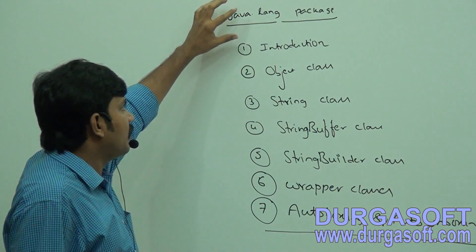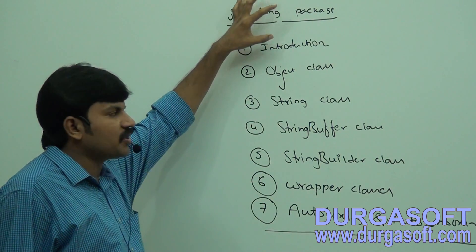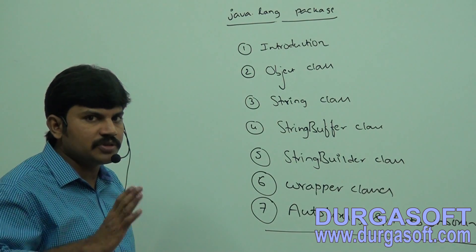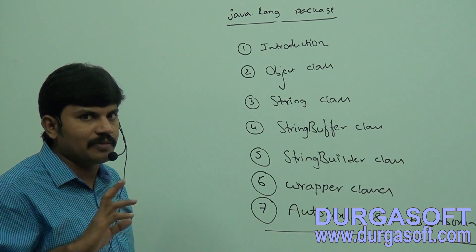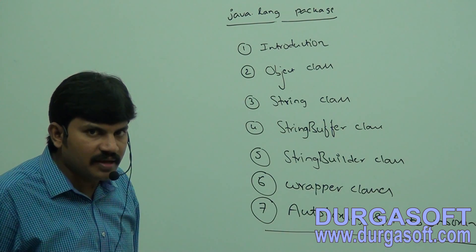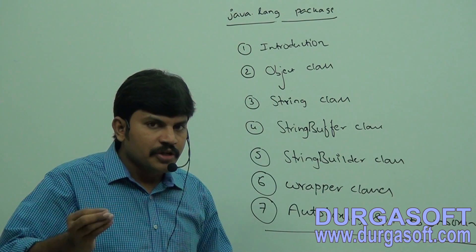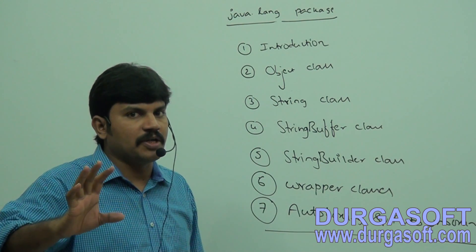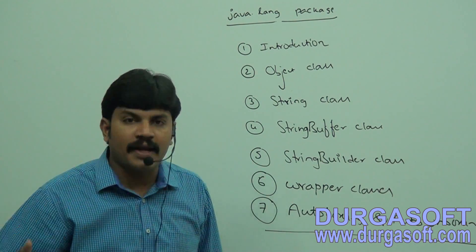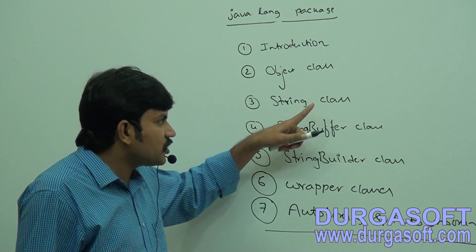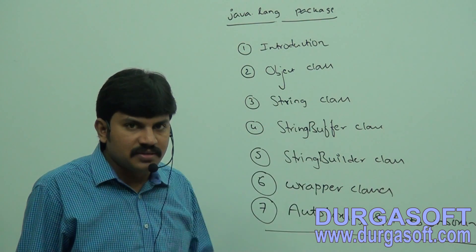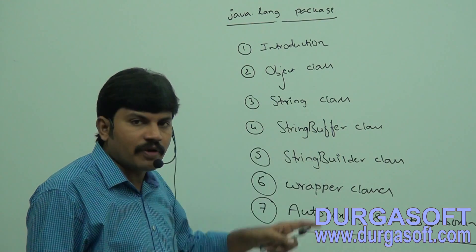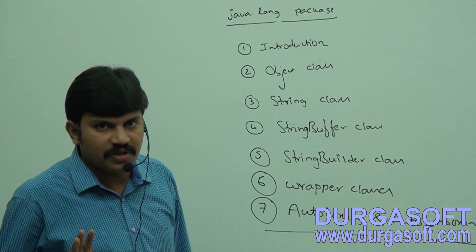First, I will explain what is the basic need or specialty of the lang package. Then we perform a post-mortem on the Object class — total how many methods are there? Eleven methods. Each method: what is the purpose, what is the default implementation, is it possible to override or not? Next, the String class — almost around 6 to 8 hours we will perform a post-mortem on the String concept.